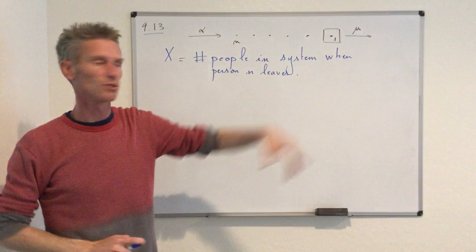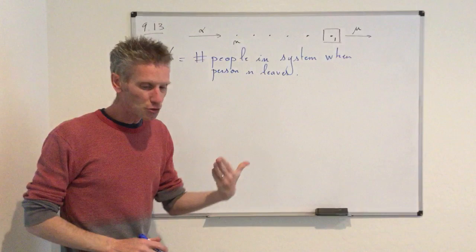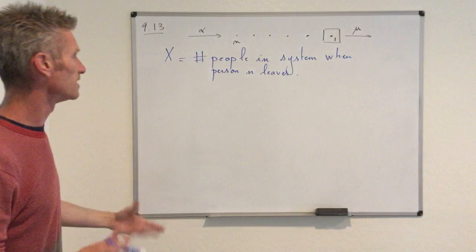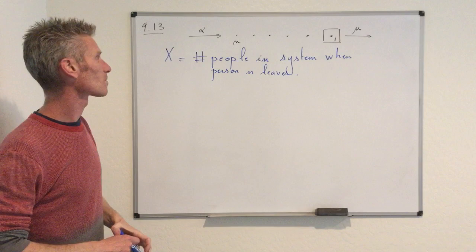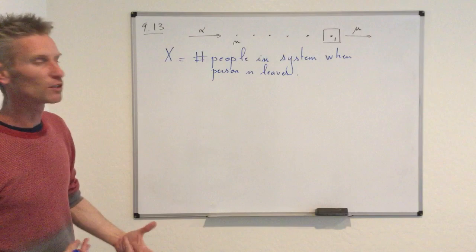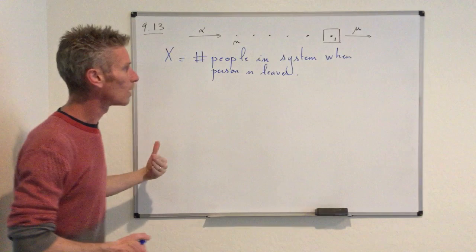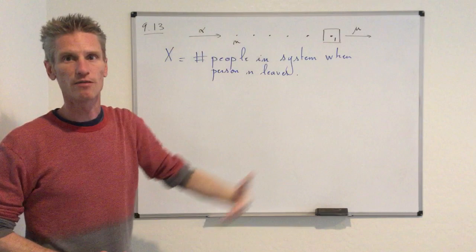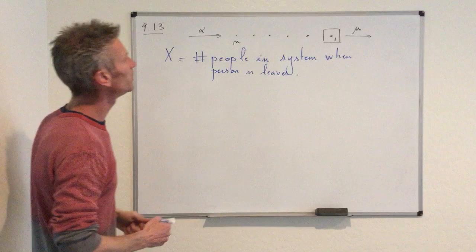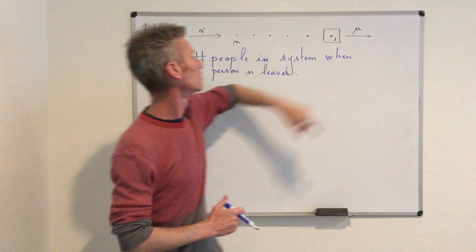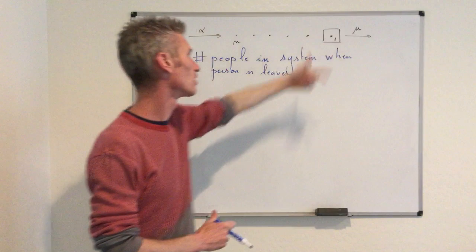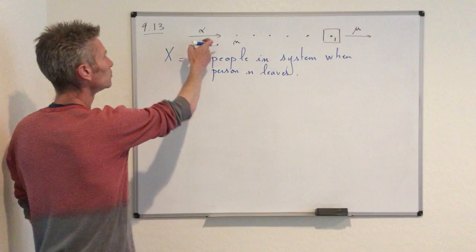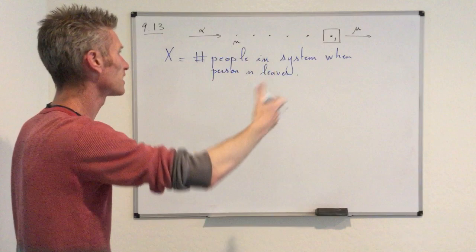To understand this random variable, same story as in the previous problem — in general when you look at queueing systems, you need to look at what are the next possible things that can happen. The system looks like that at some time. What can happen at the next update? There are only two possibilities: either person one leaves and you have one less person in the system, or a new person arrives in which case you have one more person.